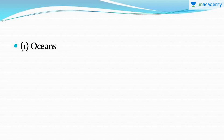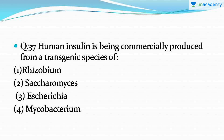Question number 37: human insulin is being commercially produced from which transgenic species? It's a very easy question and you should read NCERT thoroughly. The correct answer is Escherichia coli. The E. coli species is genetically modified, and from it human insulin is extracted and commercially produced.